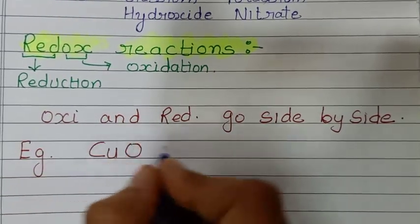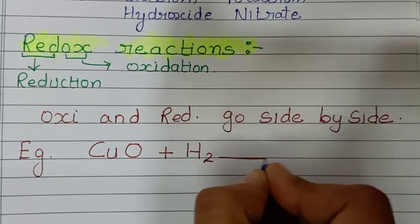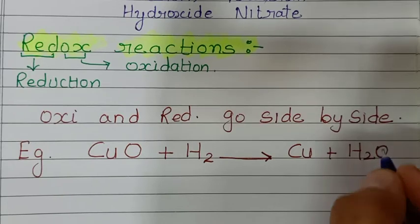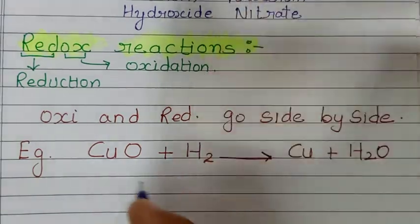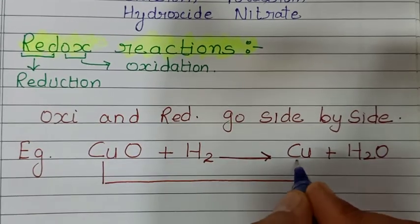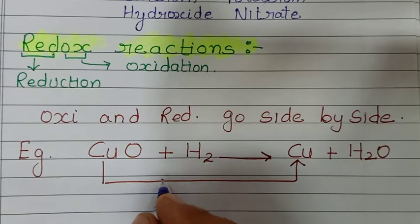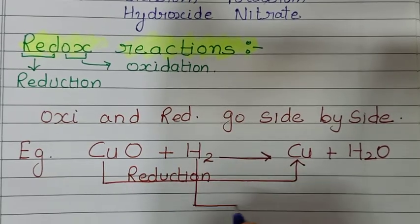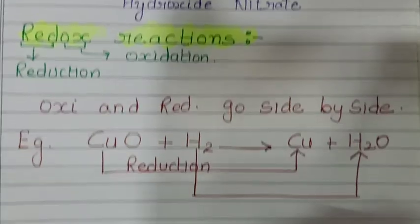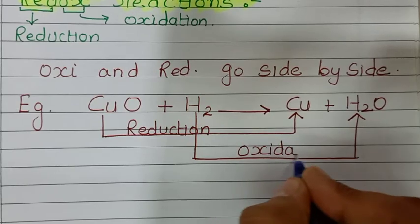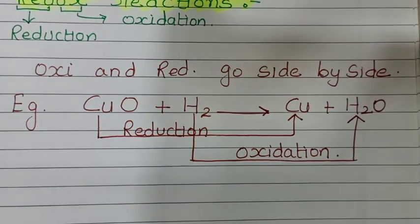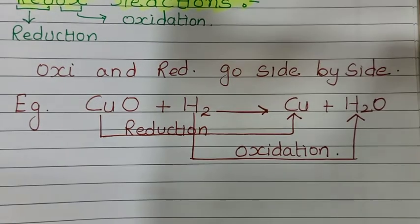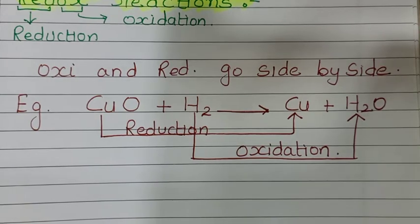For example: copper oxide CuO plus H2 gives copper metal plus water. Copper oxide lost oxygen — that undergoes reduction. Hydrogen gained oxygen to become water — addition of oxygen means oxidation. In the same reaction, both oxidation and reduction occur simultaneously. Such reactions are called redox reactions.